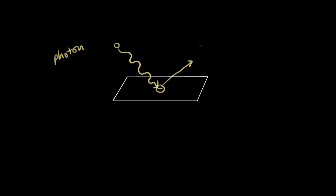Here we're showing the electron being knocked loose, moving in some direction with some velocity v. If the electron has mass m, we know there's a kinetic energy — the kinetic energy of the electron equals one-half mv squared. This freed electron is usually referred to as a photoelectron. So one photon creates one photoelectron: one particle hits another particle.